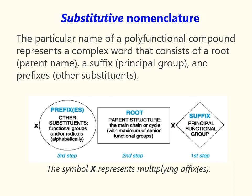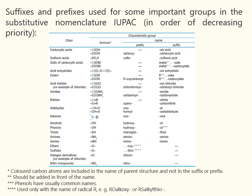Let's start with substitutive nomenclature. The particular name of a polyfunctional compound represents a complex word that consists of a root, a suffix, and prefixes. There are two types of characteristic groups. One type is designated in a name only as prefixes — the nitro group, halogens, and some other groups belong to this type. They are listed in the lower part of the table.